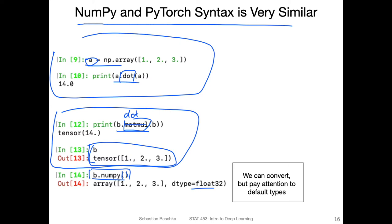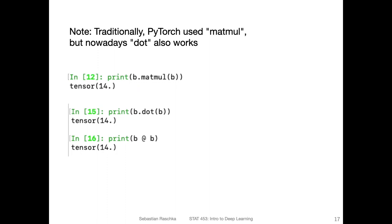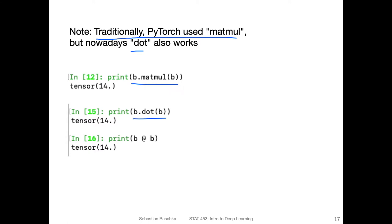Traditionally we used matmul in PyTorch, but nowadays the .dot method works the same way. So instead of b.matmul(b), we can also do b.dot(b). Python also has the @ symbol for matrix multiplication, though not many people use it. All three — b.matmul(b), b.dot(b), and b @ b — are equivalent, so you can use whichever you prefer.